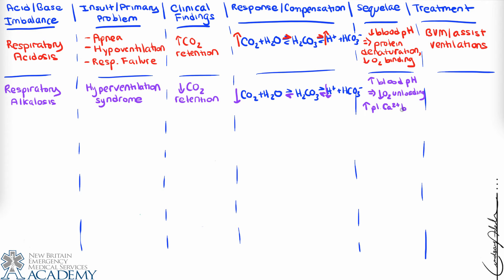With an increase in blood pH, we see decreased oxygen unloading — oxygen stays more bound to hemoglobin and it becomes more difficult to deliver oxygen to the tissues. We also see increased plasma calcium binding: calcium ions that were free-floating in the blood become bound to other ions or molecules present in the bloodstream. This binding of calcium is responsible for carpopedal spasms — the muscle contractions seen especially in the fingers and feet.